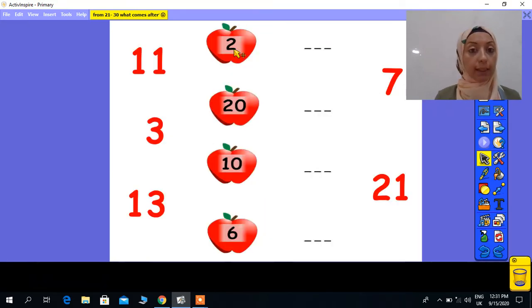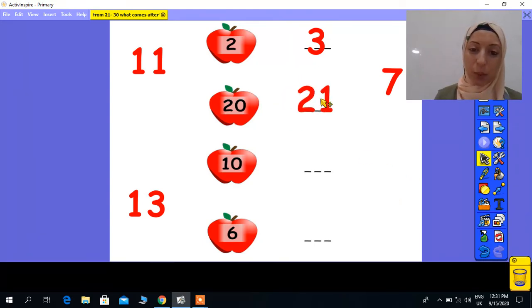What is this number? This is number 2. What comes after 2? Three. Super. What is this number? Twenty. What comes after 20? Twenty-one. Super, KG2.